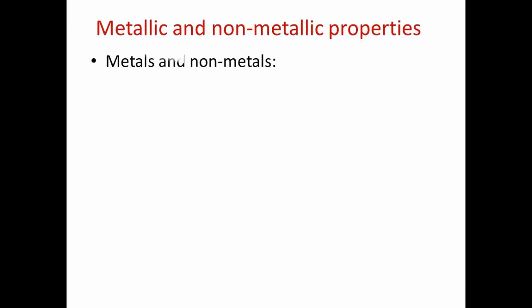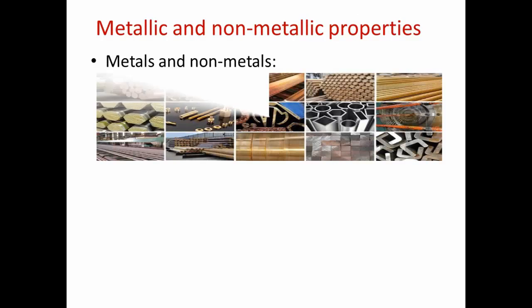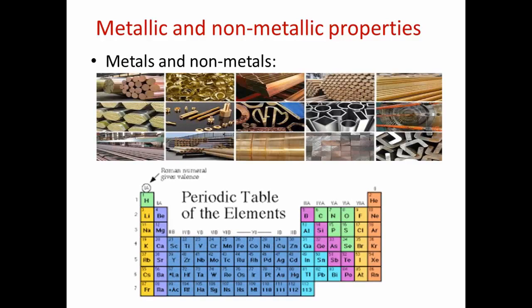The third property we are going to talk about is metallic and non-metallic property. As we have studied before, metals are elements which have metallic luster. They are good conductors of electricity and heat, they have high melting point and high boiling point, they are ductile and malleable. Non-metals are not conductors of heat and electricity, except carbon which is a good conductor of electricity. They have non-metallic luster, low melting point, low boiling point, and they are not ductile or malleable.